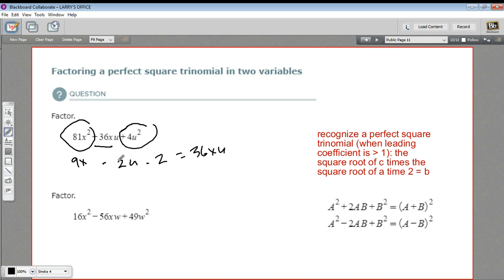To factor this, once you've determined that, it's pretty easy. You just take the square root of the first term. And because the middle term is positive, you plus the square root of the last term. So 9x plus 2u squared. And that's all there is to it. So that's following this pattern down here.